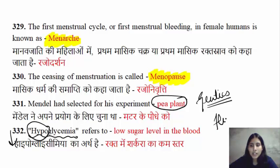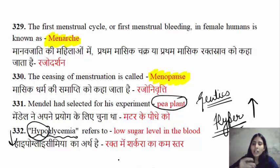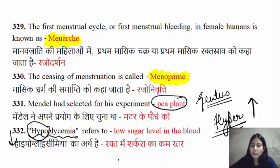Similarly, if you ask about hyperglycemia — the prefix hyper means more. So if glucose in your blood is increased, then we call it hyperglycemia.